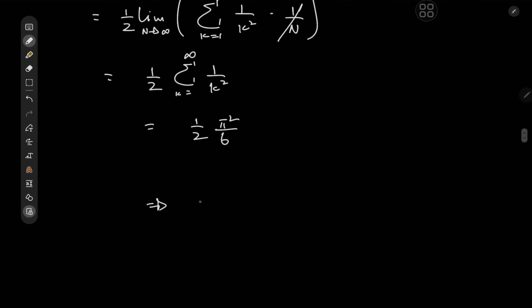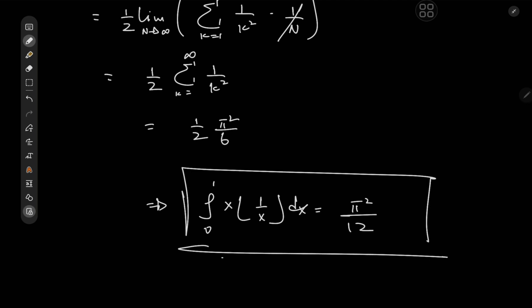So this implies that the target integral, that is the integral from 0 to 1, of x times floor of 1 over x dx equals pi squared over 12, or 1 half of zeta 2. Call it whatever you want. I found this to be a really interesting connection with the Basel problem.